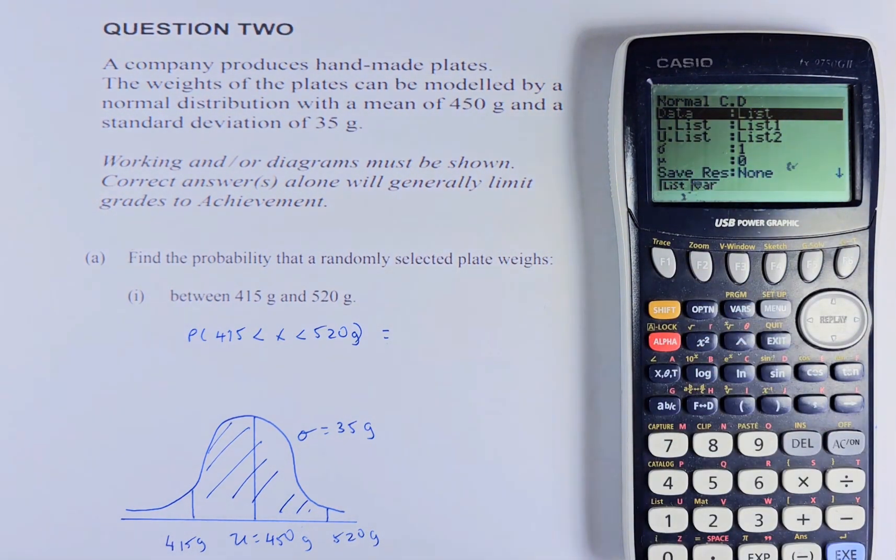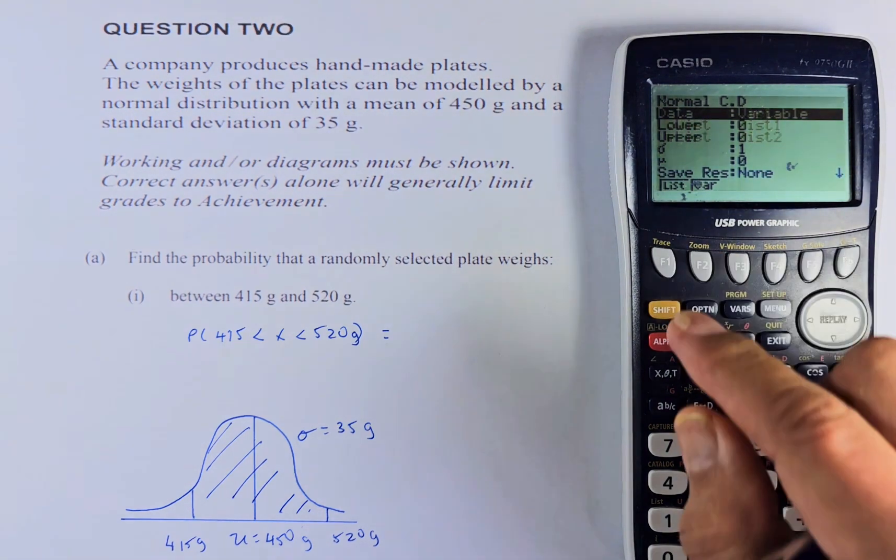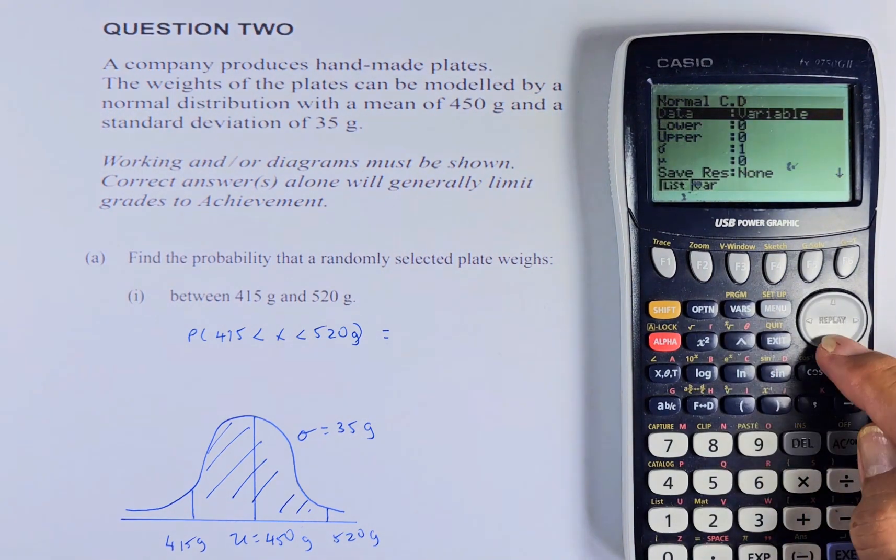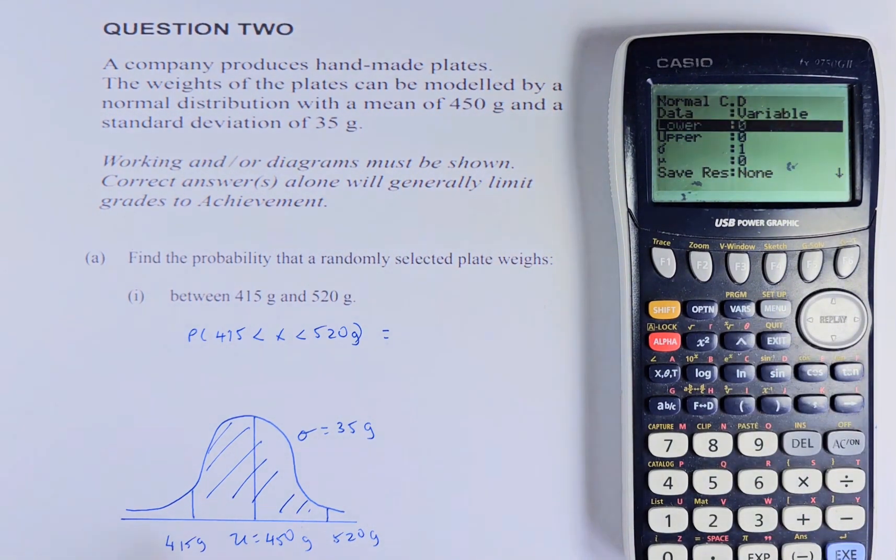Now we're going to key in the data. To key in the data, it's straightforward. You must go to variable, so F2 first. One is variable. We are going to enter the data. Lower is where it starts. The start at 415, so put 415, execute. Upper is where it ends. It ends at 520.